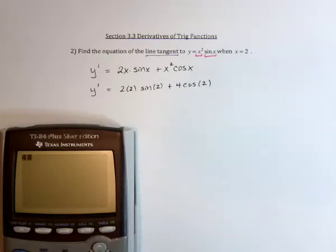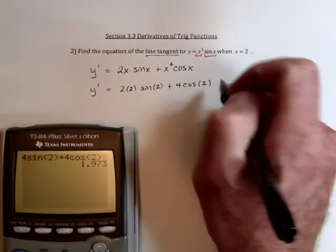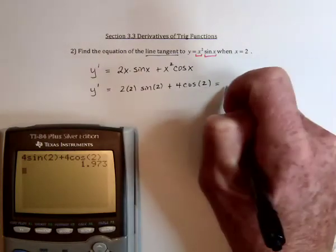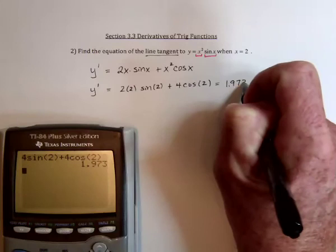Alright, then we've got 4 sine of 2 plus 4 cosine of 2. And so the slope of the tangent line is 1.973.